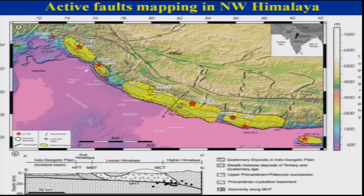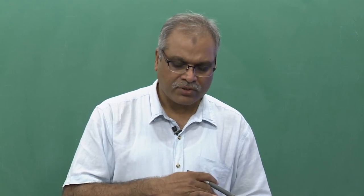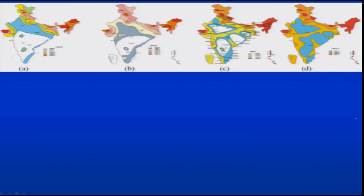The Himalayan region has had several large magnitude and devastating earthquakes, including in Kashmir in 1555, the 1905 Kangra earthquake, the 1934 Nepal-Bihar earthquake, and the 1950 Upper Assam earthquake. We will discuss these in detail when talking about earthquakes in the Himalayan region. Based on these known earthquakes from Kutch and the Himalayan region, the seismic hazard map of India is periodically updated as new data comes in.